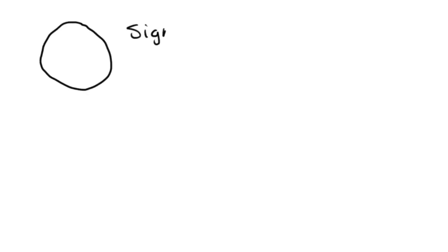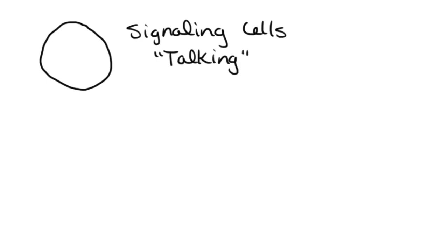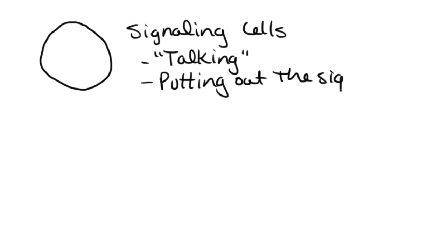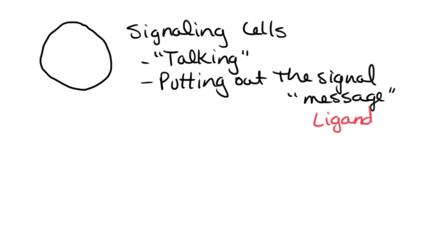If we talk about the different participants that are involved in this, we will have some cells which are going to be called signaling cells. The signaling cells are the ones that are actually doing the talking — these are the ones that are actually putting out the signal, or you could also call this the message. We do have a special name for that signal or message. The word we use to describe that is going to be ligand. That is an actual molecule that the cell is actually putting out — it is going to manufacture or produce this, and then it sends that out.